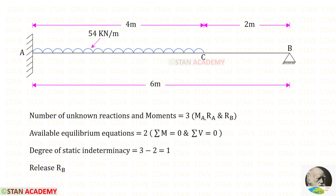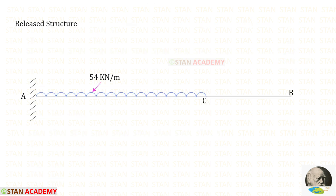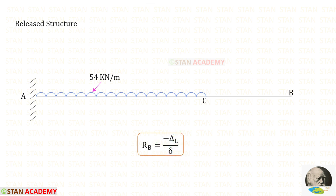To make this beam statically determinate, from support B let us release RB. When we do that, support B becomes a free end. We know the formula to find RB as minus delta_L upon delta. To find both of these displacements, we are going to use the unit load method.